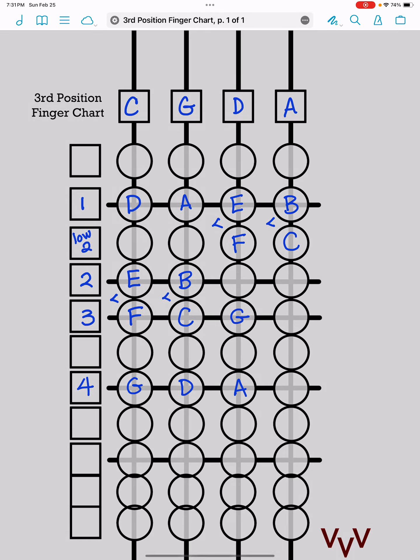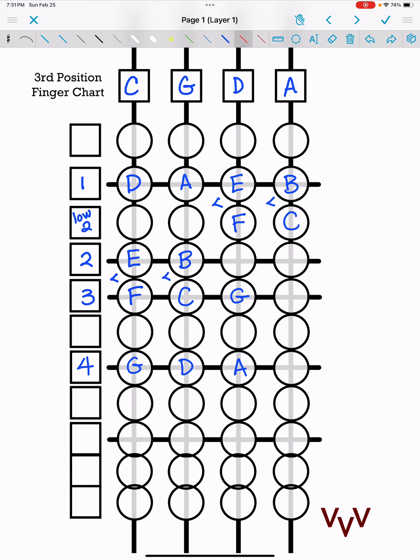And just to give you a couple of bonus notes, we'll put them in a different color. D is right here. And then E is fourth finger right there. But those are not actually part of a two octave C major scale.